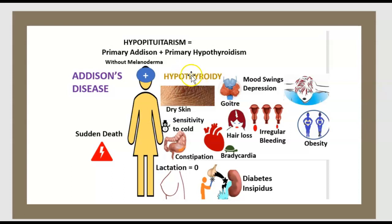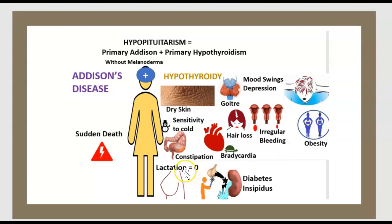Primary hypothyroidism presents with dry skin, water retention, mood swings, depression, sensitivity to cold, constipation, bradycardia, hair loss, irregular bleeding, obesity, no lactation, and diabetes insipidus sensitivity.